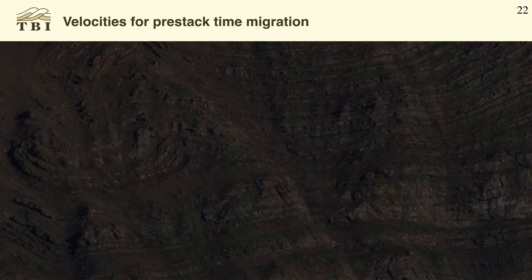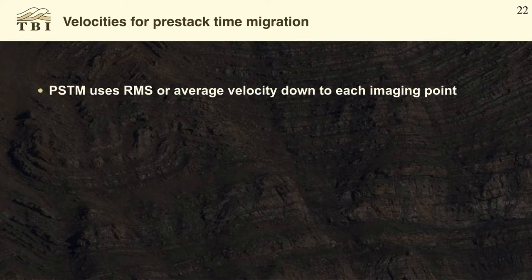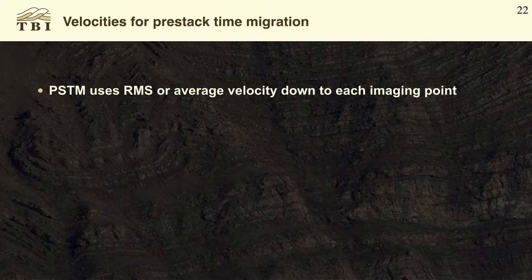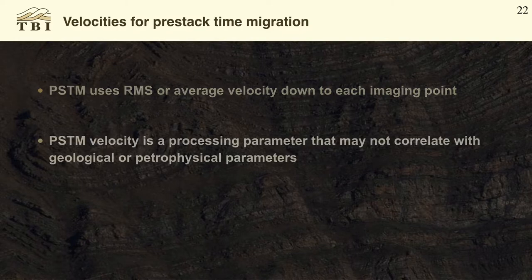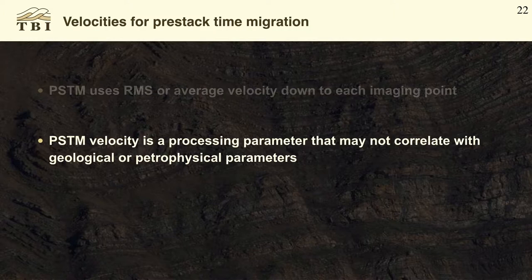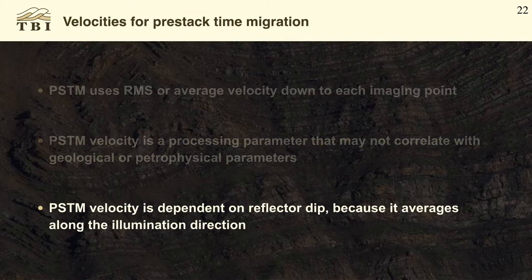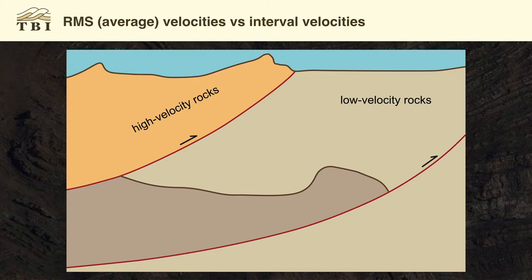Sticking with PSTM for now — PSTM uses RMS or average velocity down to each imaging point. It was initially developed as a simplification to save computer run time, but its robustness is very convenient when we don't really understand the subsurface velocity structure. The PSTM velocity is a processing parameter that may or may not correlate with geological or petrophysical parameters — generally it doesn't, because we're averaging through all the various effects. It is also dependent on reflector dip because it averages along the illumination direction.